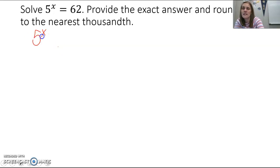So if we look at this problem, 5 to the x equals 62. It's an exponential with a base of 5. 62 cannot be rewritten as a power of 5, so we can't use that property of equality.